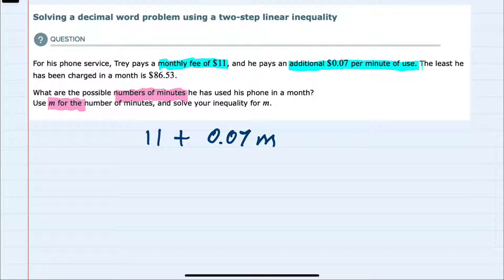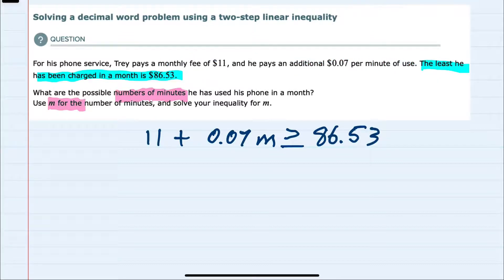and we're told that the least he has been charged is $86.53. That means that his bill has always been greater than or equal to $86.53. So on the left-hand side, we have the way his bill is calculated,